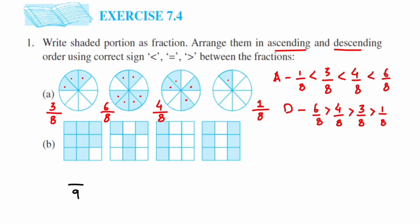In the second problem, the shapes have nine equal parts. All parts are shaded except one, giving 8/9. The next has four shaded portions giving 4/9, the next has three shaded giving 3/9, and the last has six shaded giving 6/9. Importantly, we are not cancelling or reducing these fractions because we want the denominators to remain the same.